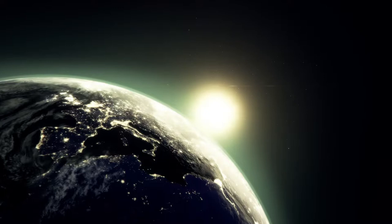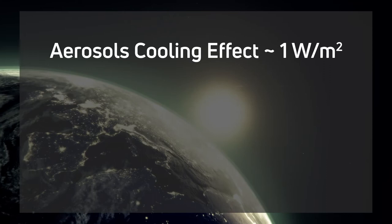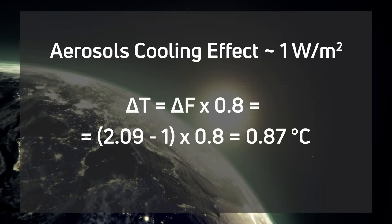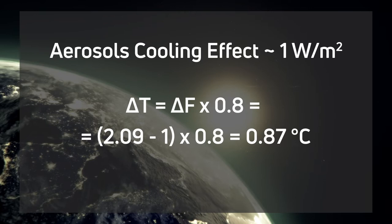However, these calculations take only two parameters into account: carbon dioxide concentration and temperature. Another important factor is aerosols, which scatter incoming solar radiation and have a cooling effect. The exact magnitude is unclear, but it is estimated at 1 watt per square meter. If we correct our delta F from 2.09 to 1.09 to account for this effect, we land on 0.87 degrees of warming — matching the observed warming of 0.8 to 1.2 degrees from the pre-industrial era.